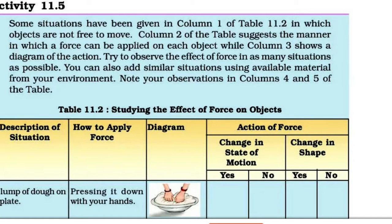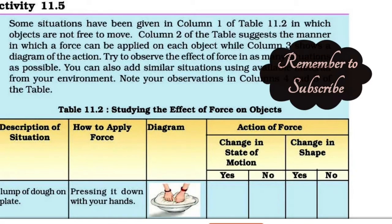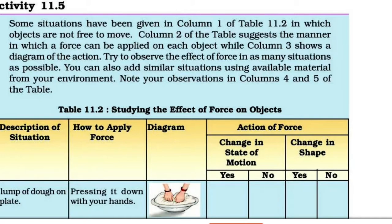Column 1 describes the situation — one object that is in a given state, with a short title of the description. Column 2 shows how to apply force on the same object. Column 3 is a diagram showing the interaction where force is applied. Try to observe the effect of forces in as many situations as possible. You can also add similar situations using available materials from your environment. Note your observations in columns 4 and 5 of the table.